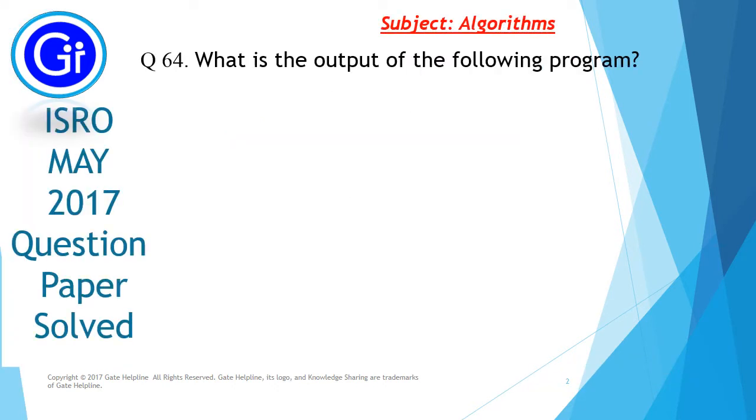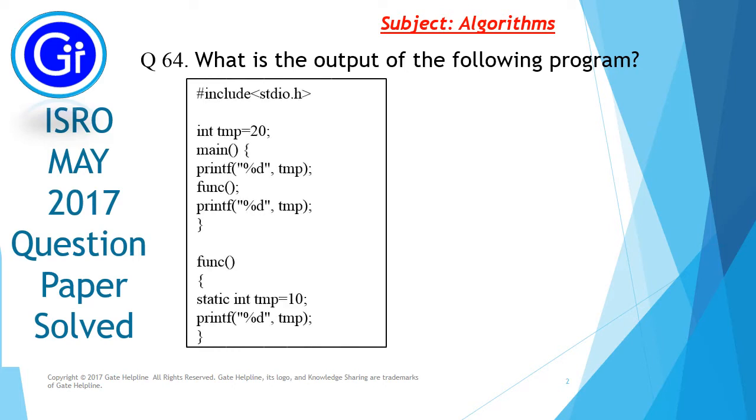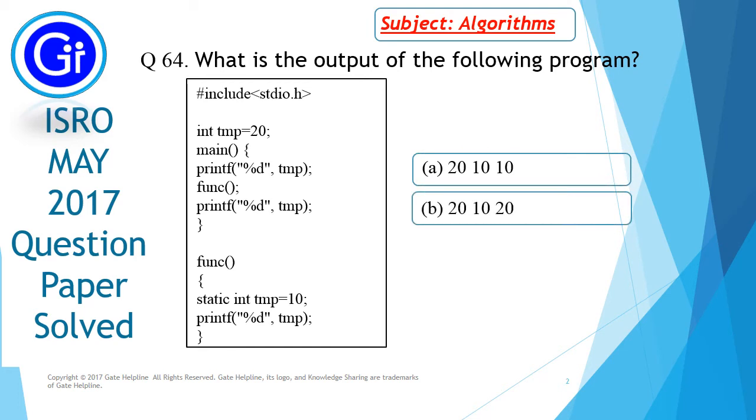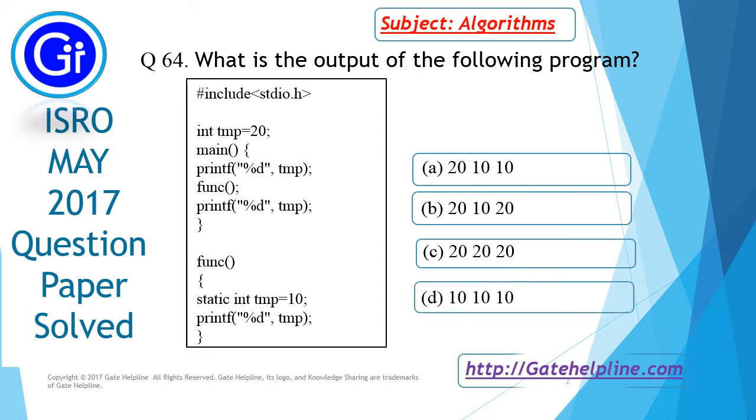So question number 64 is, what is the output of the following program? And this is the program and the options are a) 20-10-10, b) 20-10-20, c) 20-20-20 and d) 10-10-10.